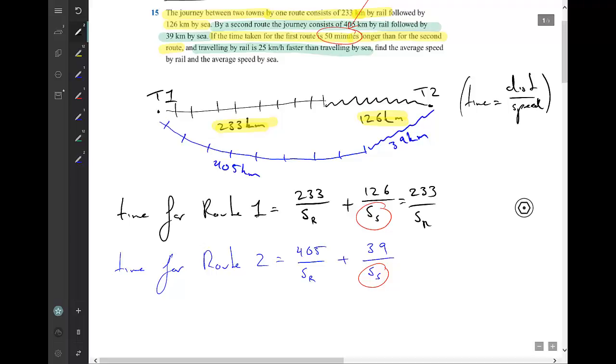Let's remove that one and rewrite each of them just in terms of the speed of the rail. So 233 on SR, plus 126 on SR minus 25, because traveling by sea is 25 kilometers an hour slower. We're going to do the same thing down here. So this is 405 on SR plus 39 on SR minus 25.